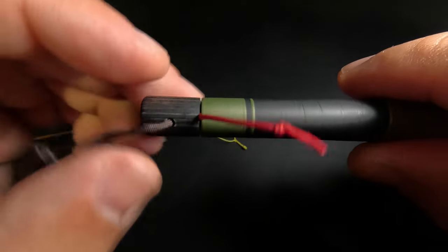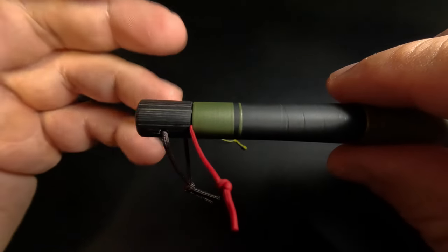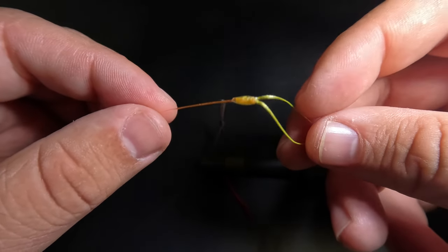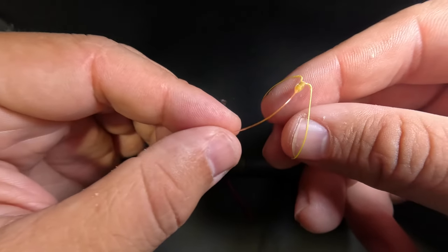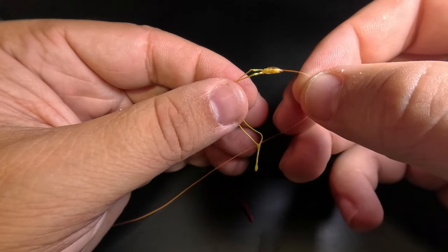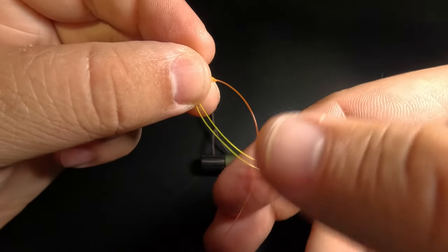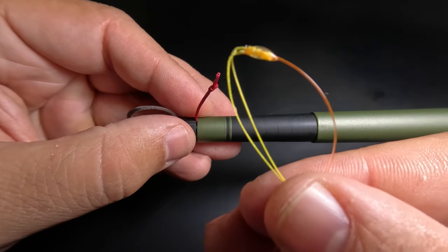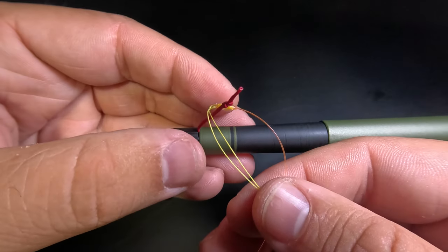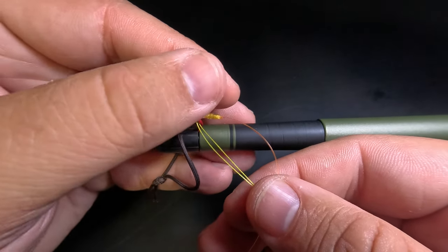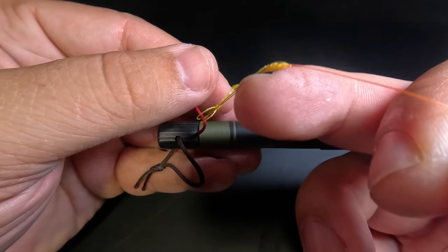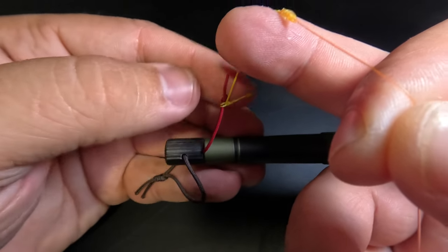So now to perform the girth hitch knot, what I'm going to do is reach through my loop here and grab my level line and pull that through the loop. By doing this, you'll see that I have now created another loop here. Now I'm going to take my new loop here and place that around the Lillian just above the stopper knot. And now I'm going to grab the end of my Lillian here and then pull on my level line to cinch that loop down just behind that stopper knot.